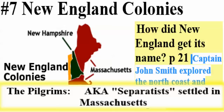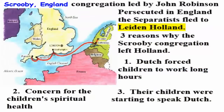The first people to come to the New World I'm going to call the Pilgrims. The Pilgrims were also known as Separatists. If you Google 'Pilgrims' you'll get a good synopsis of what happened. The Pilgrims were a group of Separatists that lived in a town called Scrooby, England. The Scrooby congregation was led by John Robinson. Part of your homework was to mouse over this area and find out about Scrooby, England — where it was on the map.